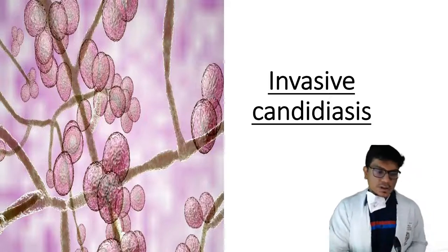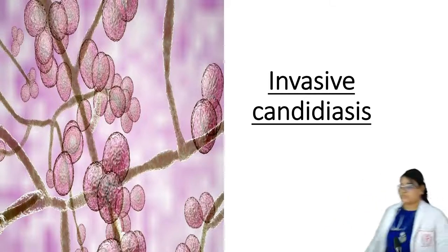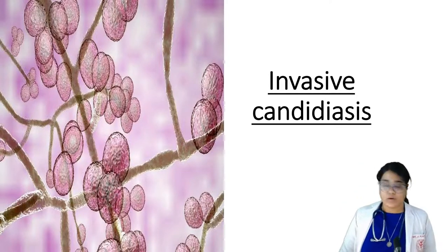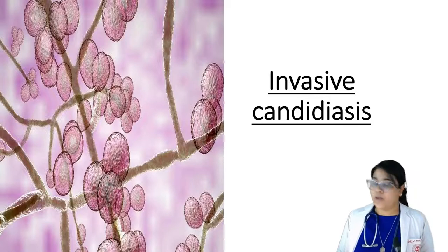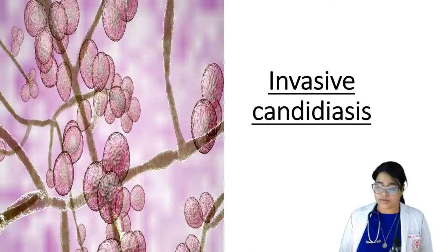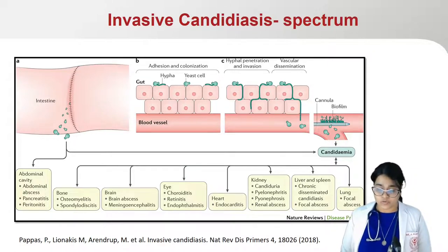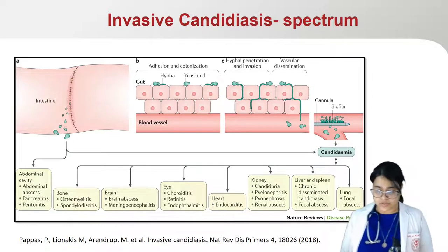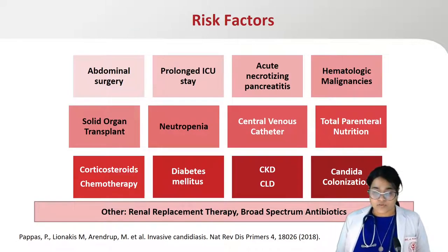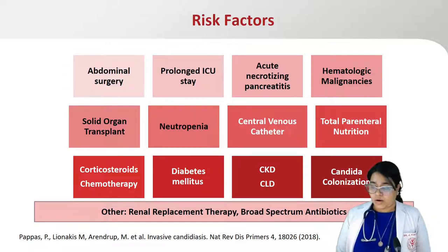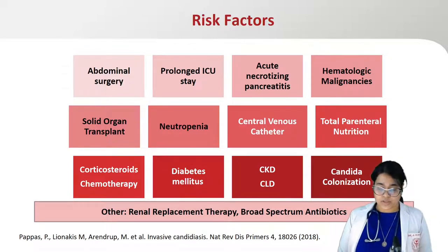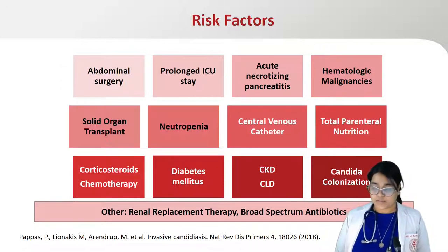We now move on to invasive candidiasis, which is also associated with high morbidity and mortality and is a prevalent IFI in critically ill patients. The spectrum of invasive candidiasis mainly involves bloodstream infections or candidemia, followed by deep-seated infections, the most common being intra-abdominal infections. Common risk factors include surgery, immunosuppression states such as hematological malignancy, solid organ transplant and neutropenia, presence of central venous catheters, and patients undergoing hemodialysis or receiving total parenteral nutrition.